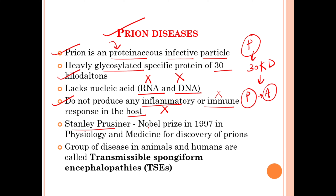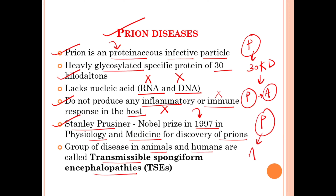Stanley Prusiner won the Nobel Prize in 1997 in the field of physiology and medicine for the discovery of prions. Prions can cause diseases in animals as well as in humans, and these diseases are called the Transmissible Spongiform Encephalopathies, also known as TSE.